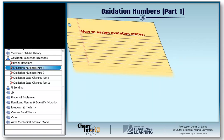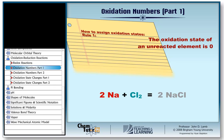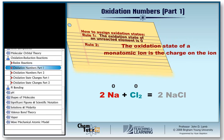There are specific rules for assigning oxidation states to elements in chemical species. First rule: the oxidation state of an unreacted element is zero. For example, the oxidation state of sodium in the reaction shown is zero, and the oxidation state of chlorine in Cl2 is also zero — we make no distinction between the two atoms in Cl2, they are both zero. Next rule: the oxidation state of a monatomic ion is the charge on the ion. So the oxidation state of sodium in sodium chloride is plus one, and the oxidation state of chlorine in sodium chloride is minus one.